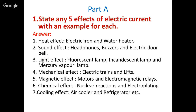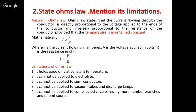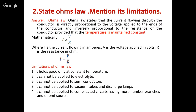Second question: state Ohm's law and mention its limitations. The statement carries two marks and the limitations carry three marks, totalling five marks. Ohm's law states that the current flowing through a conductor is directly proportional to the voltage applied to the ends of the conductor and inversely proportional to the resistance, provided the temperature is maintained constant. Mathematically, I is proportional to V/R, where I is current in amperes, V is applied voltage in volts, and R is resistance in ohms.